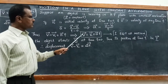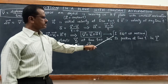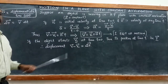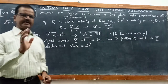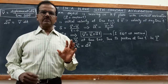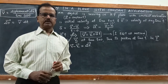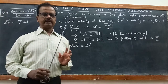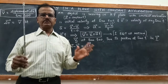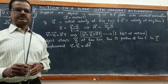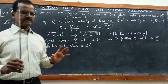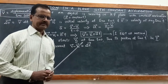Now that we have the first equation of motion, we will derive the second equation. The second equation involves displacement. Displacement is the change in position vectors: final position vector minus initial position vector gives the displacement vector.